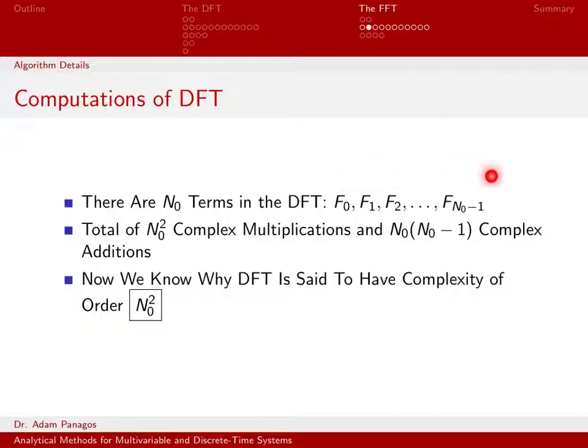There are N0 of these that I need to do. So I have N0 computations to do, each of which takes N0 complex multiplications. So that's N0 times N0, or N0 squared, complex multiplications. Similarly, I have N0 of these computations I need to do, each of which required N0 minus 1 complex additions. So there's a total of N0 times N0 minus 1 complex additions that I need to perform.